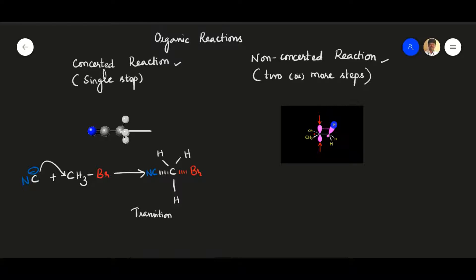Is it possible to stop the reaction at the transition state stage? No — we cannot stop any organic reaction at the transition state. The reaction proceeds further and products are formed: methyl cyanide plus bromide ion. The transition state is a hypothetical state, very high in energy and highly unstable. We cannot isolate the transition state formed in any reaction — it is not isolable.